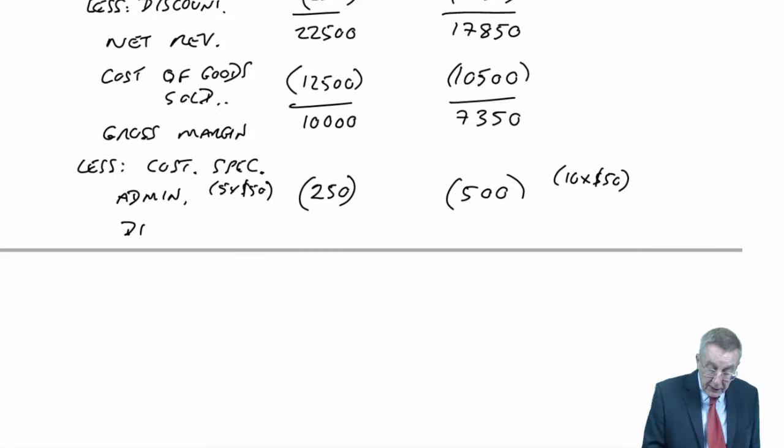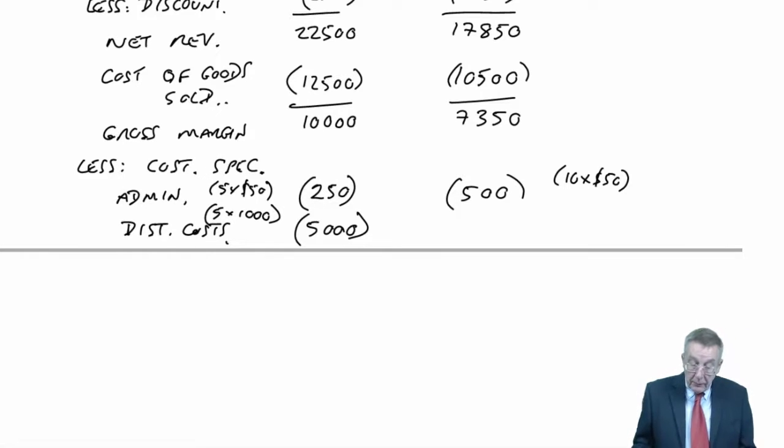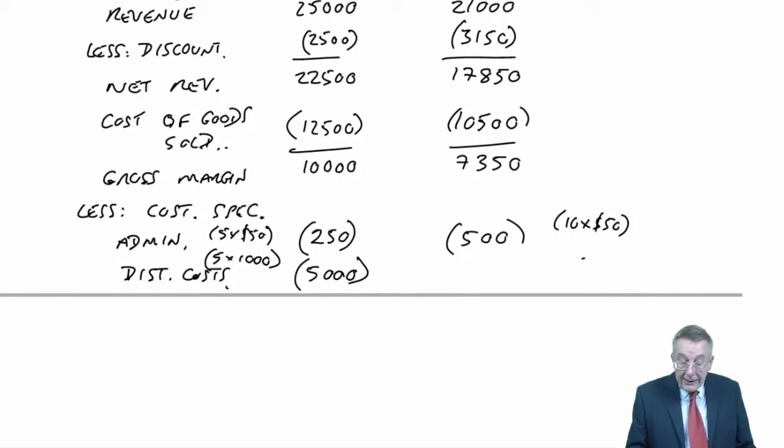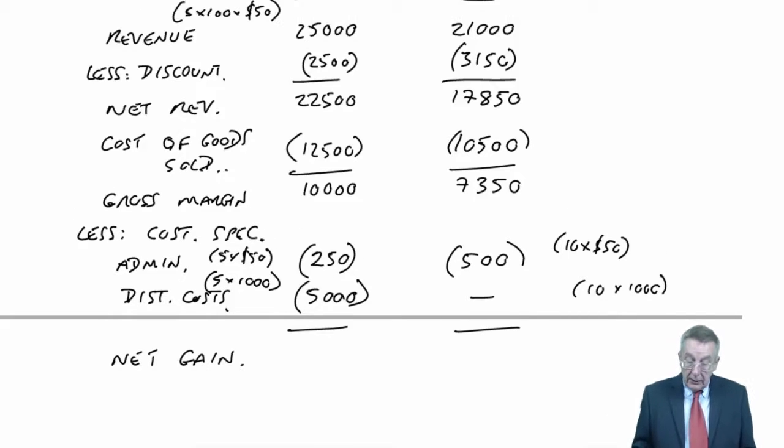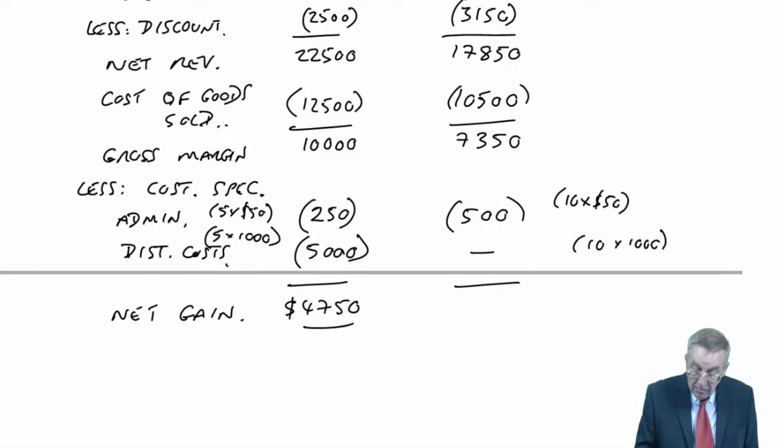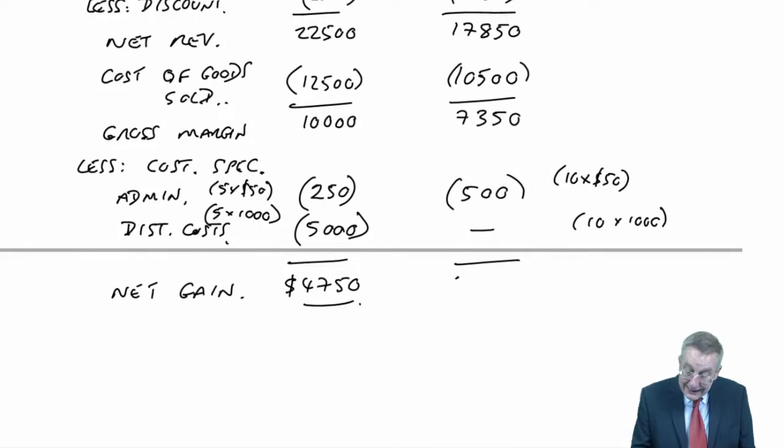In addition, the other cost mentioned is distribution costs. It's $1,000 per order. Again, Gollum had five orders at $1,000 is $5,000 as far as Gollum is concerned. But as far as Sam is concerned, there are 10 orders that $1,000 each time would be $10,000. But remember, he gets the discount of 15% because they collect the shoes and there aren't any distribution costs. So in fact, that discount is very worthwhile. A discount of $3,150 to save ourselves $10,000. As a result, the net gain on each customer for Gollum is $4,750 and for Sam is $6,850.